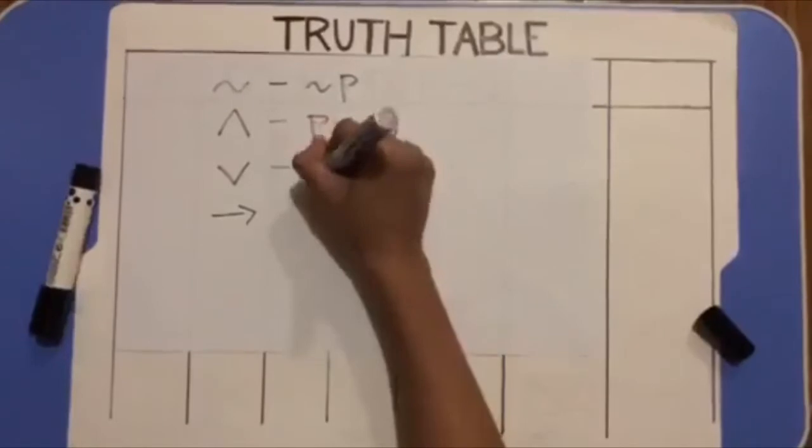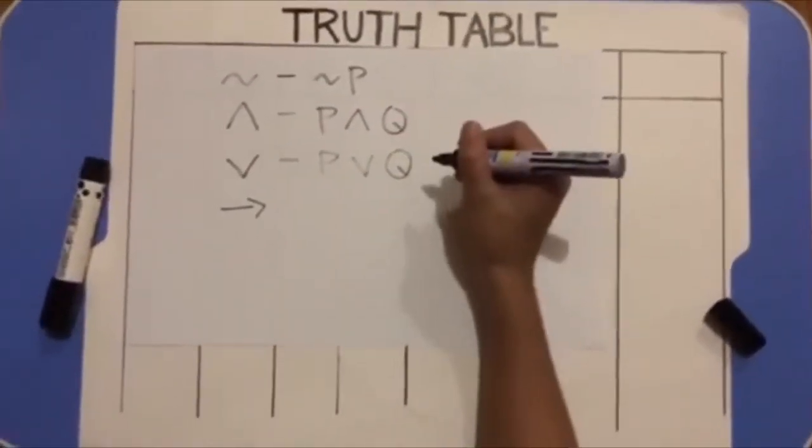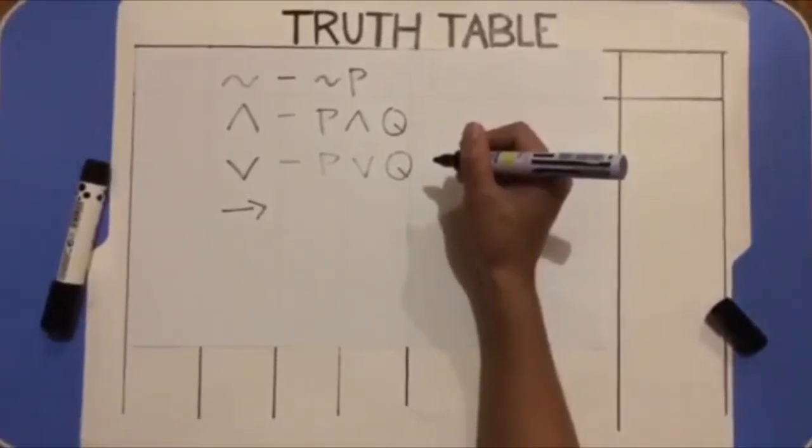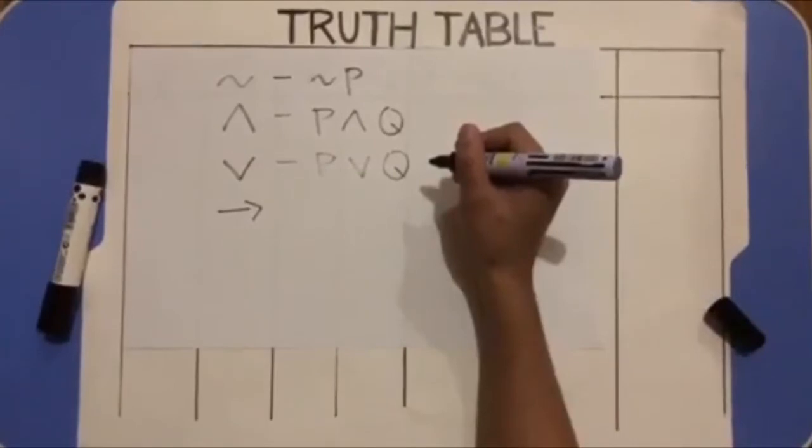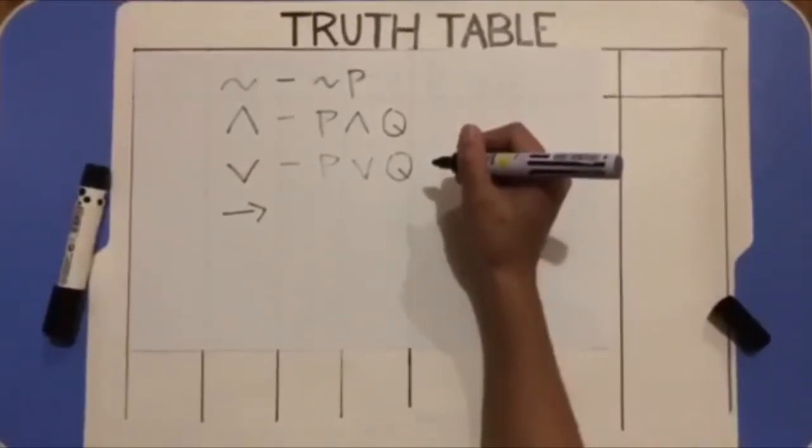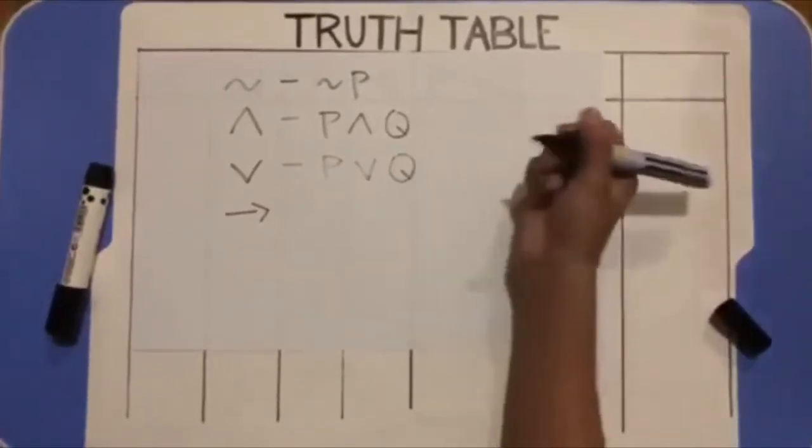Next is P or Q. P or Q is true if either P is true or Q is false or both. Remembering that we're using or in the inclusive sense, it's only false if both P and Q are false.